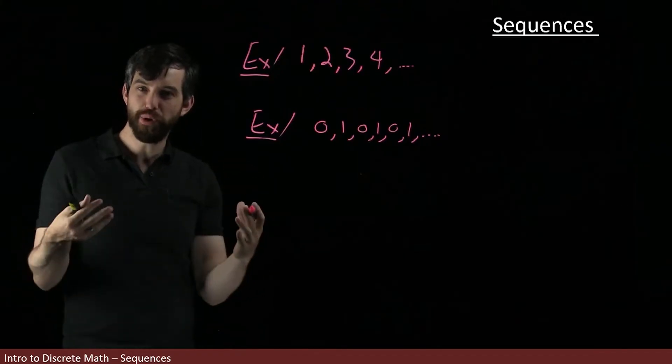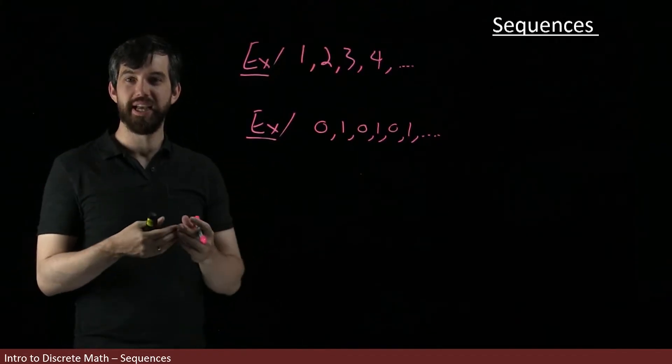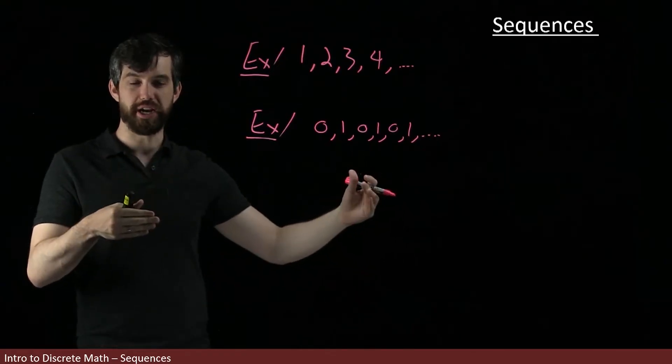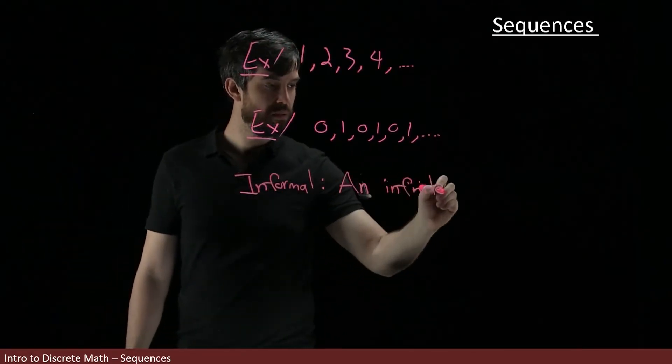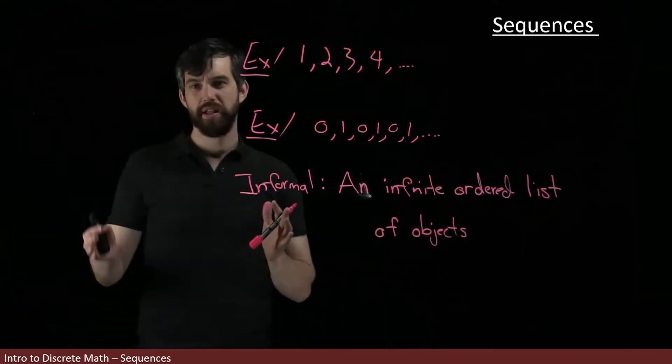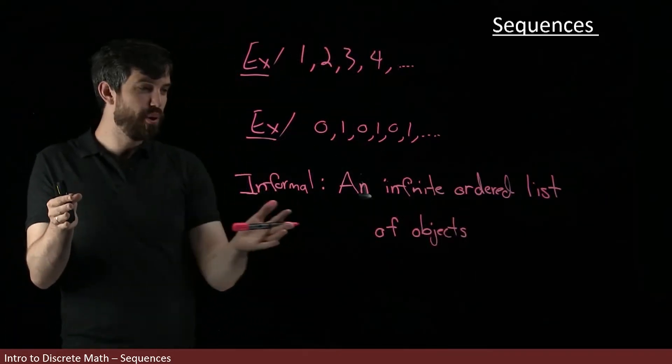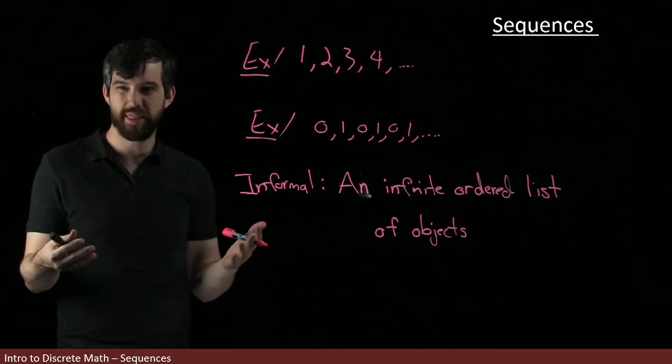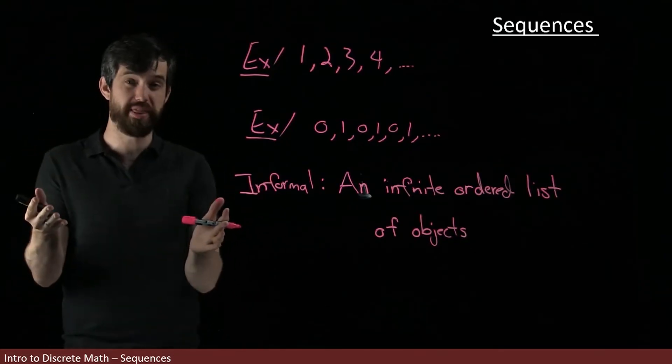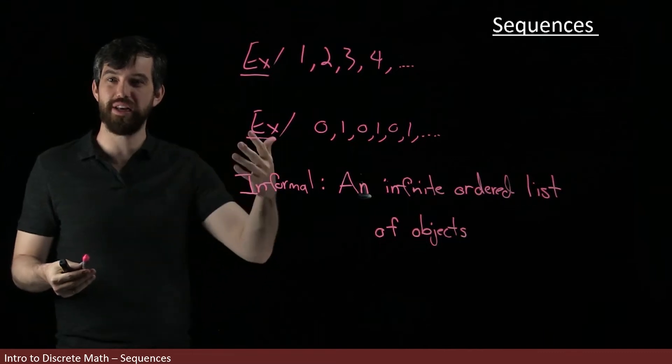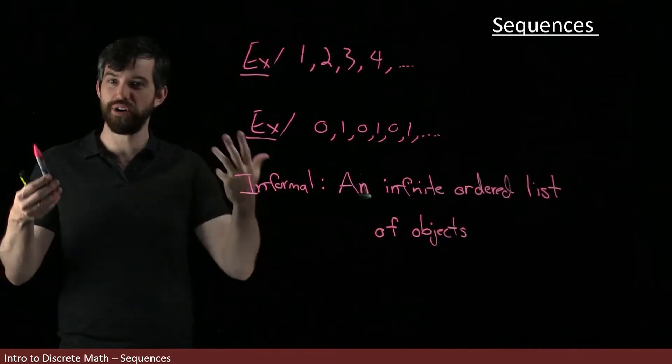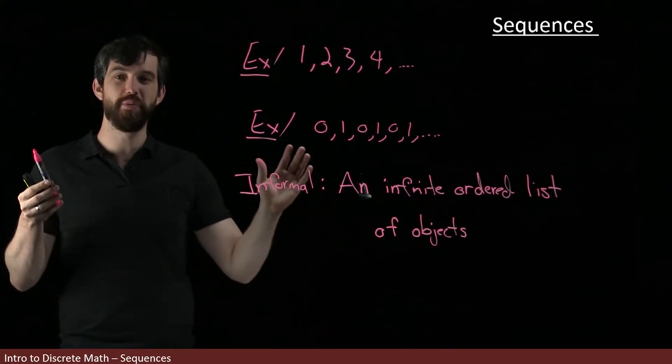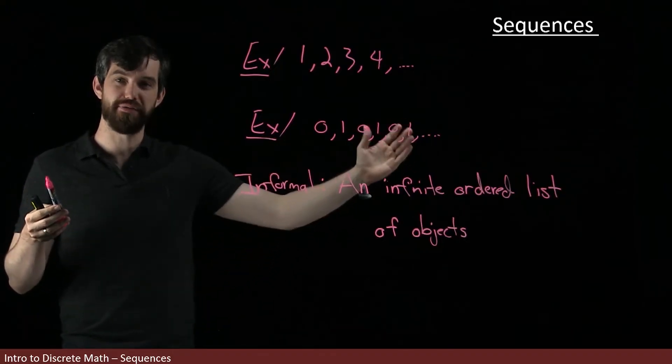So my informal notion of a sequence is this infinite ordered list of mathematical objects. Note that I don't put numbers here. The objects could be all kinds of weird mathematical things, although we normally deal with numbers. So for example, I could have an ordered list of functions or an ordered list of sets or all kinds of different objects. But for the most part, we'll be dealing with an ordered list of numbers.